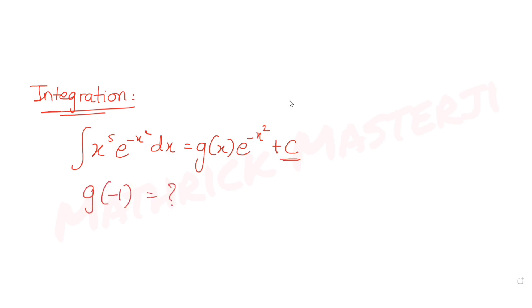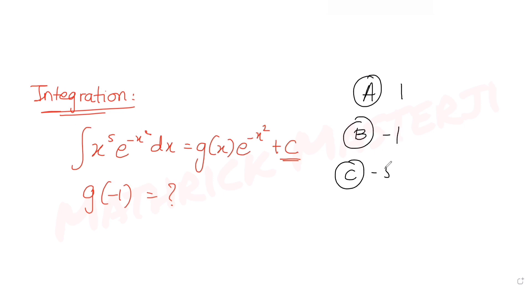The answer choices given to us are: 1, minus 1, minus 5 over 2, and minus 1 over 2. We need to figure out which one of these answer choices is the correct answer.